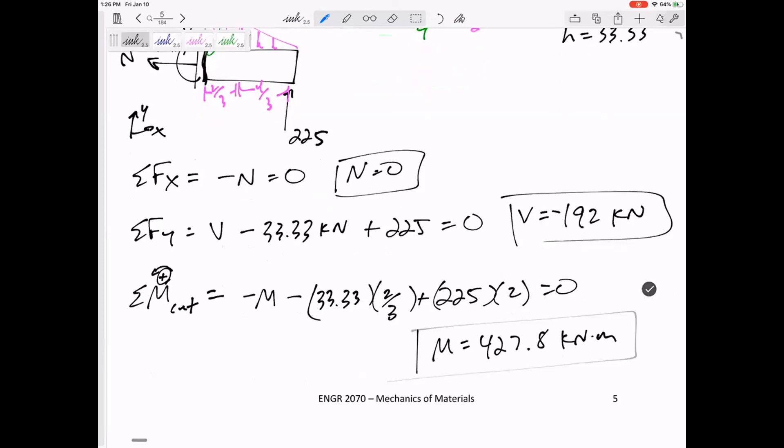So my internal moment is 427.8 kilonewton meters. It came out positive. I'll leave it positive. It came out positive, so I'll leave it positive. All right, this is a review, hopefully.